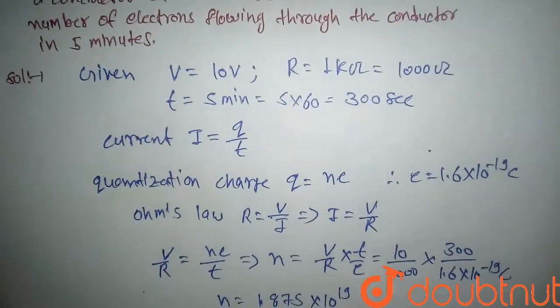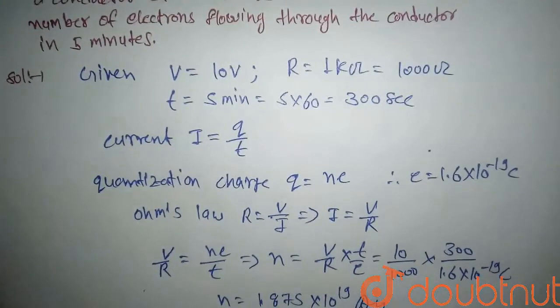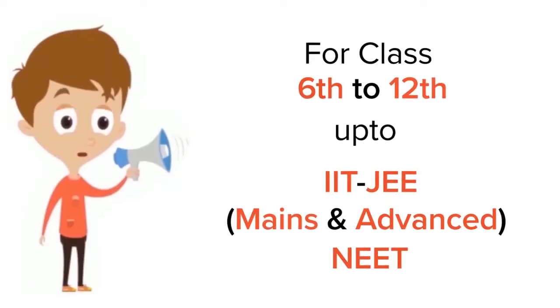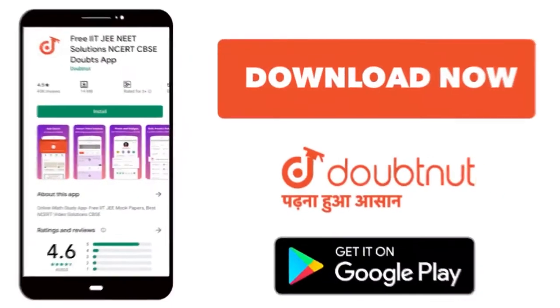So this is the number of electrons flowing through the conductor in 5 minutes. This will be our answer. Thank you. For class 6 to 12, IIT-JEE and NEET level, trusted by more than 5 crore students. Download Doubtnut app today.